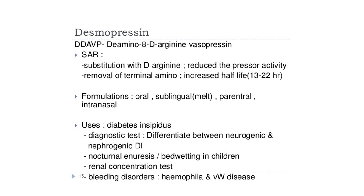Desmopressin has less pressor effect compared to vasopressin, which causes arterial hypertension. In terms of structure-activity relationship: substitution with D-arginine reduces pressor activity, and removal of the terminal amino acid increases half-life to about 13 to 22 hours. Available formulations include oral, sublingual, parenteral, and intranasal. Uses include: diabetes insipidus, diagnostic testing to differentiate neurogenic from nephrogenic diabetes insipidus, nocturnal enuresis (bed-wetting) in children, renal concentration testing, and bleeding disorders such as hemophilia.